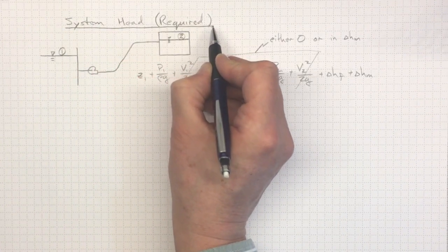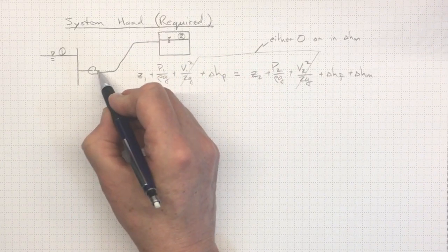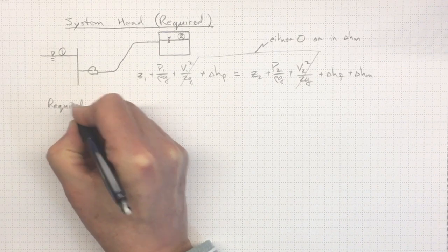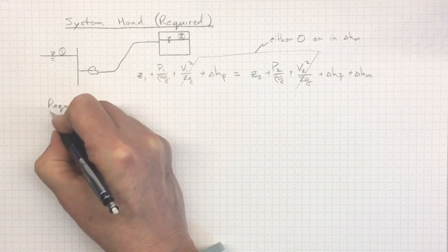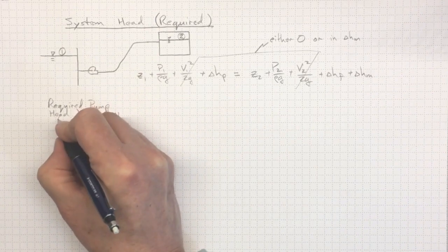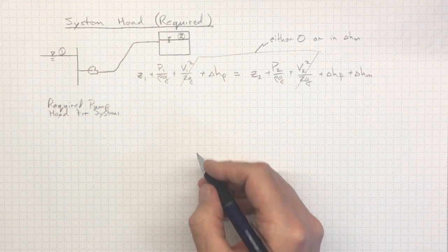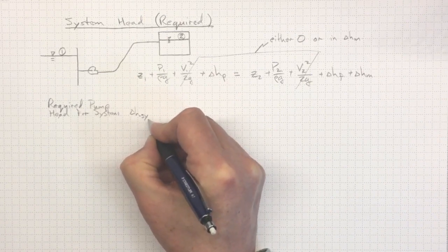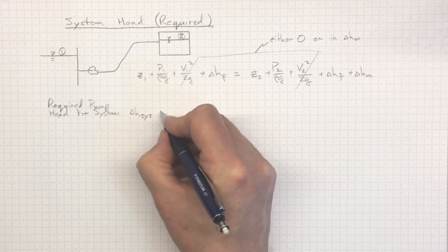So to be clear about the difference between what the pump can do and what the system requires, we're going to start talking about the required pump head for the system to operate. That is what the pipe needs in order to get the flow that we're looking for as the delta H for the system, the head rise required for the system.